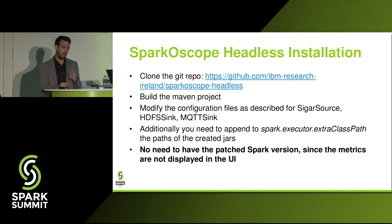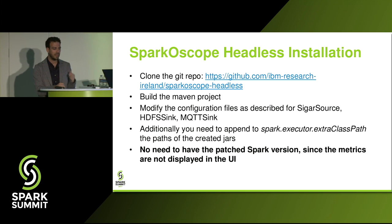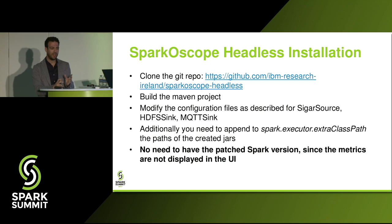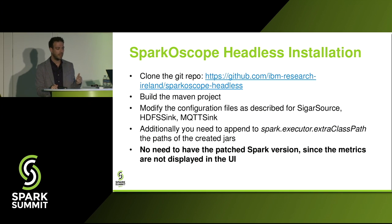The headless installation is a bit simpler. We have a different repository for the headless version — you just clone it, build it as a Maven project, and configure the same sinks and sources as described previously. The only thing you need to do is append the JARs to the Spark executor extra class path. That's why we call it headless — the metrics are not being displayed on the UI in this case.